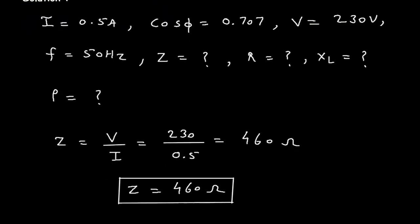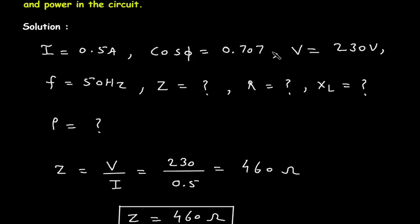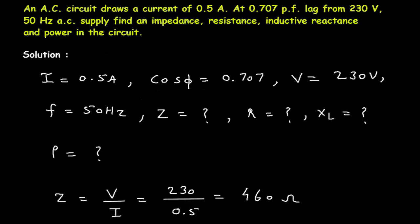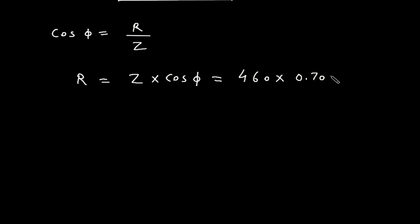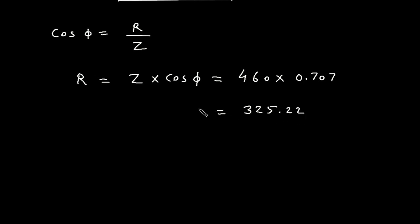Next, we find resistance R. Using the power factor formula, cos φ equals R upon Z. We have cos φ equal to 0.707 and impedance Z equal to 460, so R equals Z multiplied by cos φ, which is 460 multiplied by 0.707. This gives R equal to 325.22 Ohm.